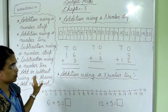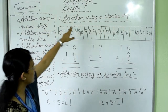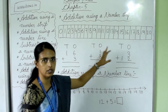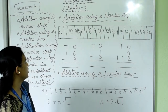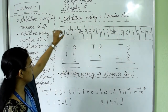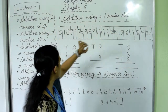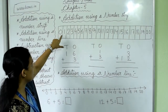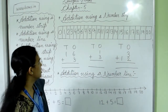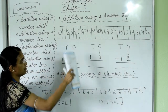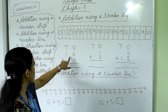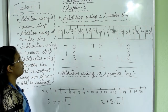The first topic is addition using a number strip. We have already done this type of sum in our previous chapters, so this is a revision. This is our number strip, and the numbers are written from 0 to 20. There is a sum written here: 16 plus 3.